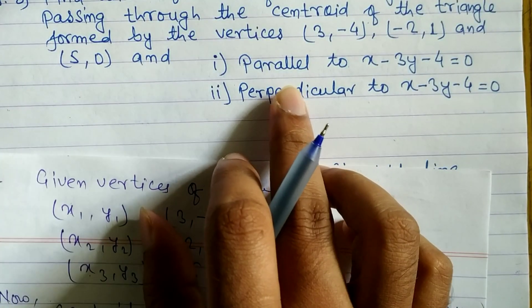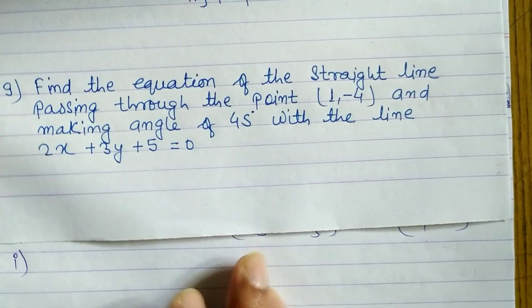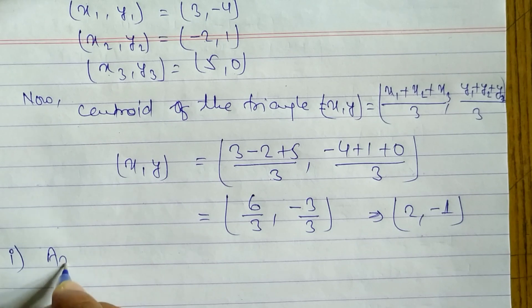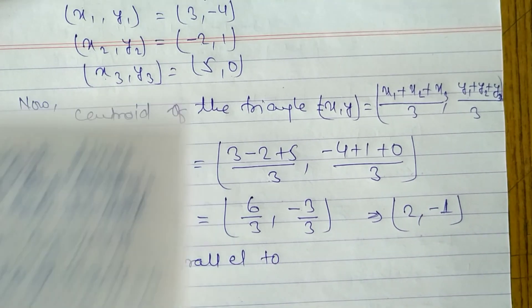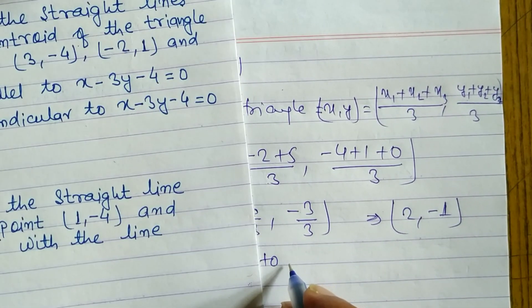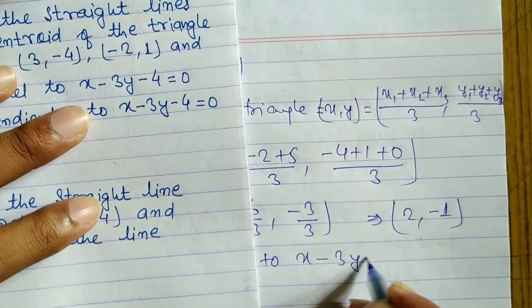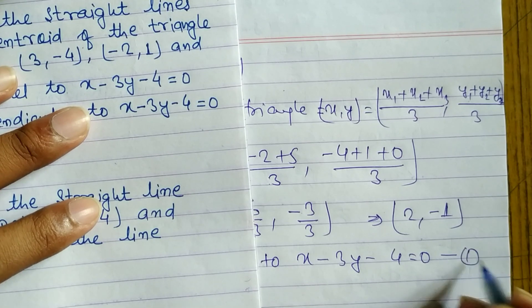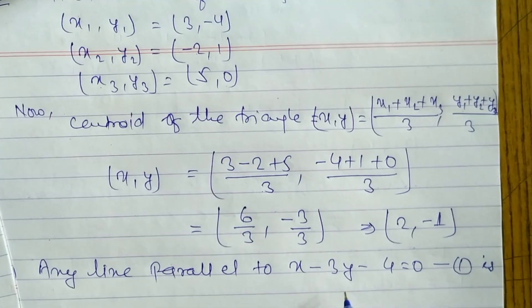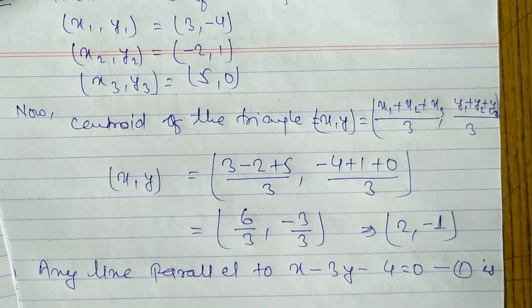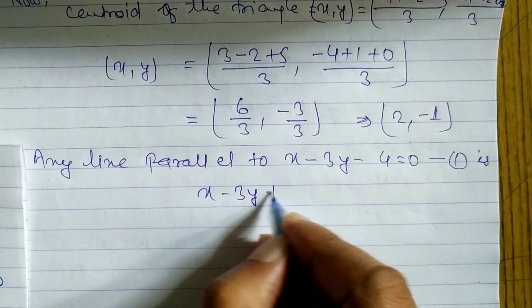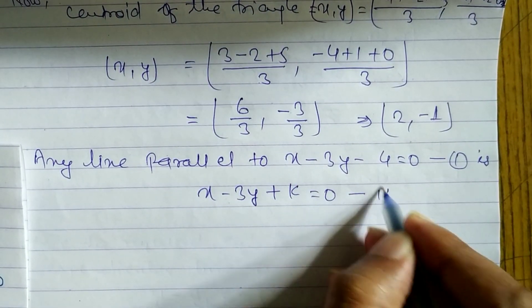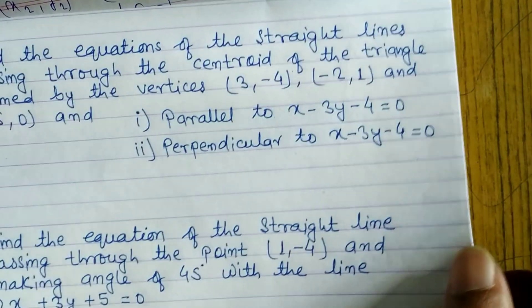In part one we have to find the equation of a line parallel to x - 3y - 4 = 0. Any line parallel to this line is written as x - 3y + k = 0. We just keep the same coefficients and replace the constant -4 with +k.